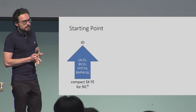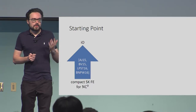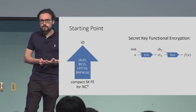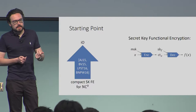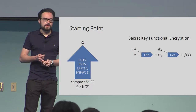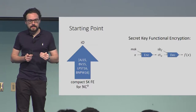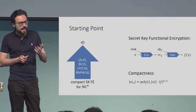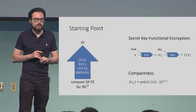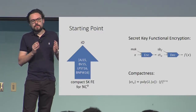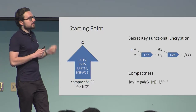The starting point of our construction, as well as for previous IO constructions, is that IO is implied by compact functional encryption. Functional encryption allows you to encrypt some value x and then, given a secret key for function f, you can decrypt to obtain f of x. The security guarantee is that you learn nothing about x beyond f of x. Compactness means that the size of the ciphertext grows at most sublinearly in the size of the functions we want to compute. We only have to construct such an FE scheme for functions in NC0.